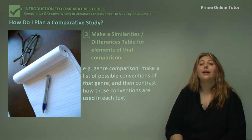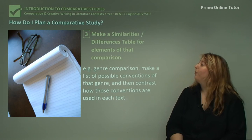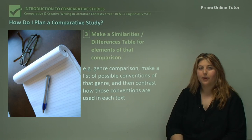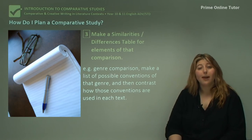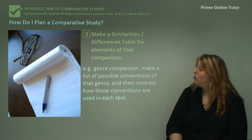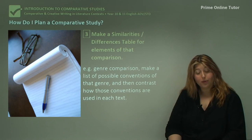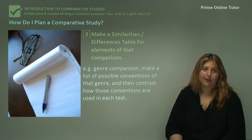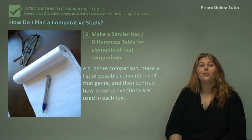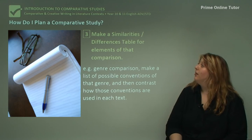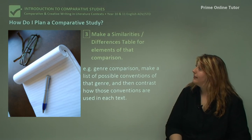The next thing you want to do is make a similarities and differences table. Think about the elements of that comparison. If the comparison is thematic, put down all the themes that are similar in both texts. If it's a genre comparison, list all the possible conventions of the genre and then contrast how those conventions are used in each context. Think about similarities but also differences at this point.